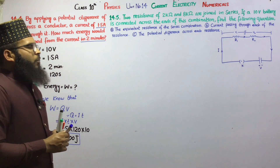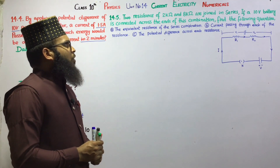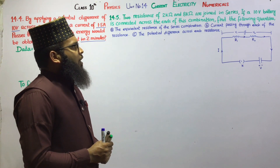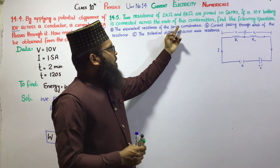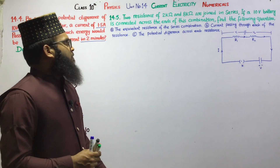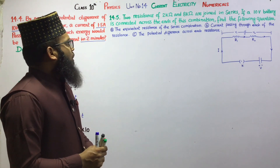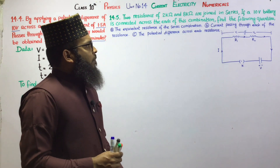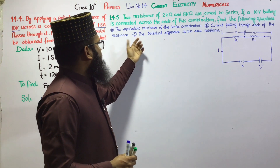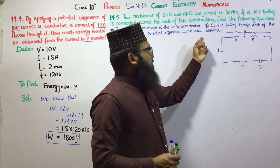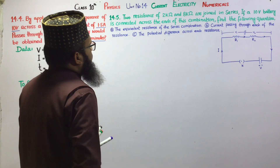Next, dear students, Numerical 14.5: Two resistances of 2 kilo-ohm and 8 kilo-ohm are joined in series. If a 10 volt battery is connected across the ends of this combination, find: (A) the equivalent resistance of the series combination, (B) the current passing through each resistance, and (C) the potential difference across each resistance.